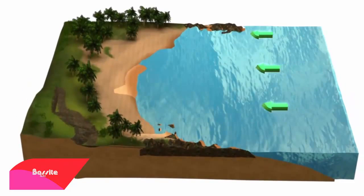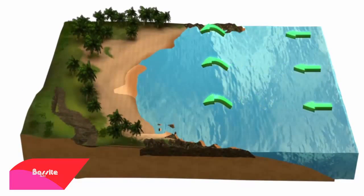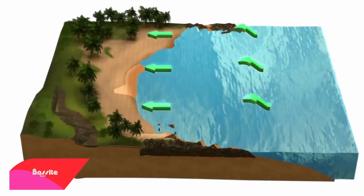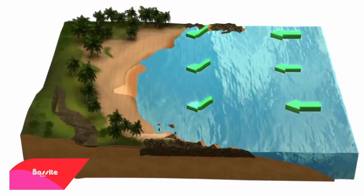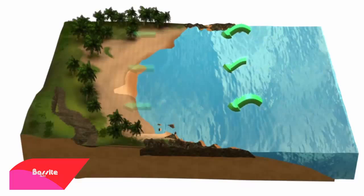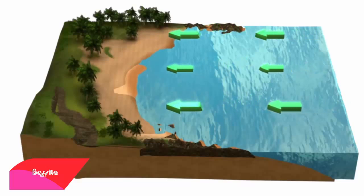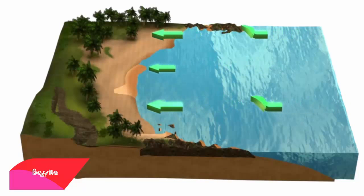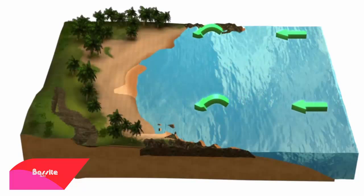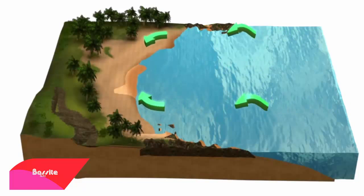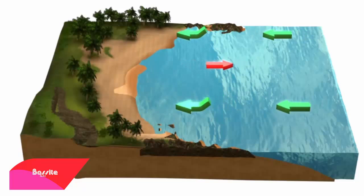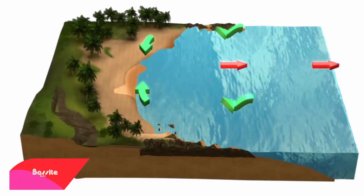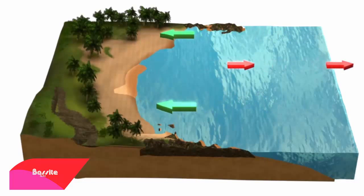Rip currents are common on coastline breaking waves, but inbound waves break more strongly in sub-locations. Circulations are causing outbound rip currents to travel narrow and fast moving heavily.